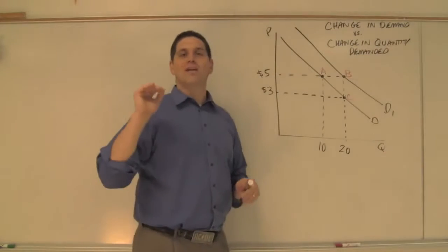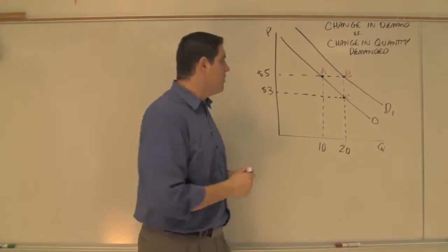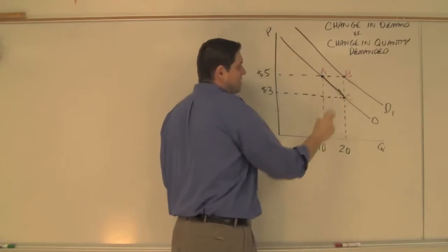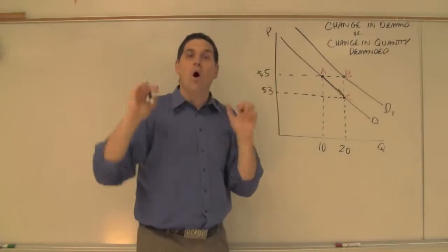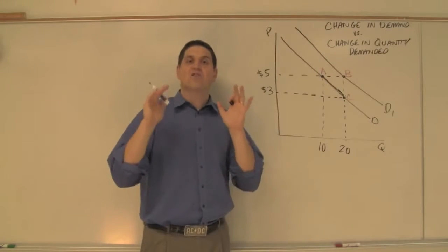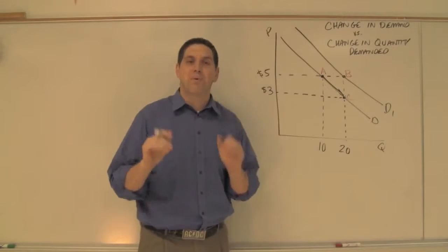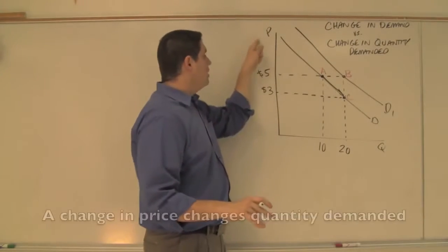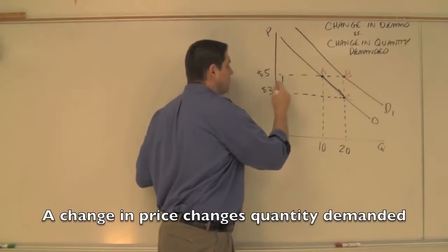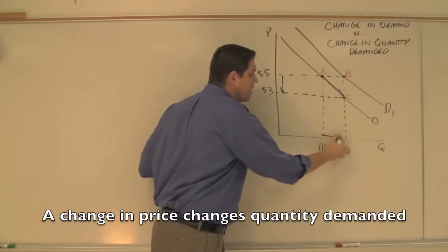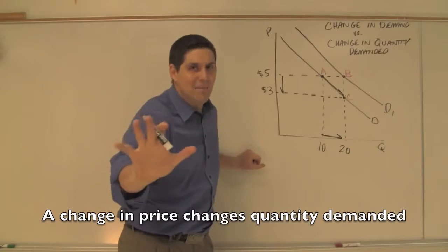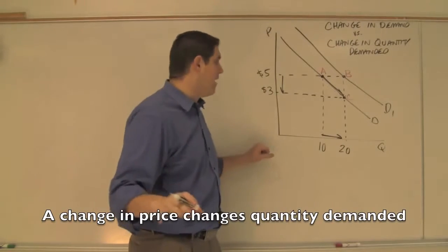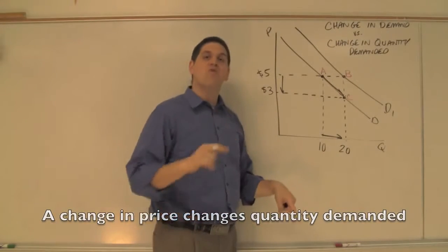A change in quantity demanded is movement along the curve, in this case from point A to C. The only thing, pay attention, the only thing that affects quantity demanded is price. It's the only variable. A lowering of price, when they lower the price from 5 to 3, that would increase the quantity demanded. Not the demand. It increases the quantity demanded from 10 to 20. Movement along the curve.